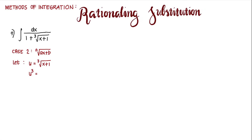So u cubed is equal to x plus 1. Finding the differential, 3u squared du equals dx.